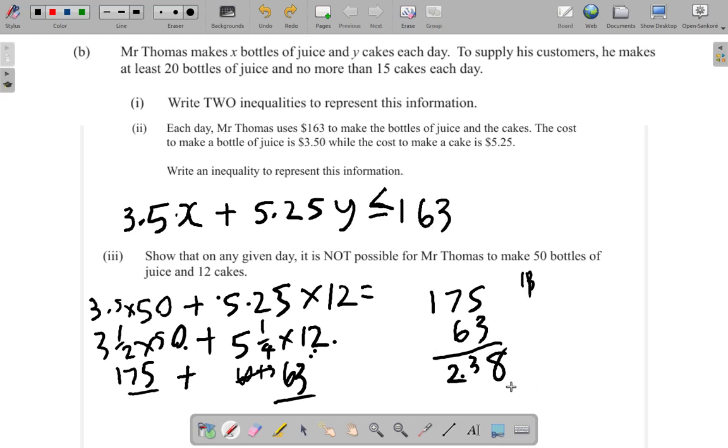So, he wouldn't be able to make so much, so many juices and cakes because he only has $163 and would be required to spend more than what he has. He would be required to spend $238, which is more than what he has to make those juices and cakes. So, that's the answer for part 3.